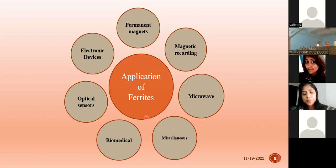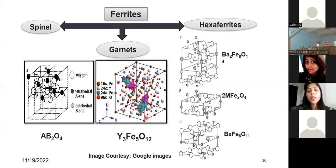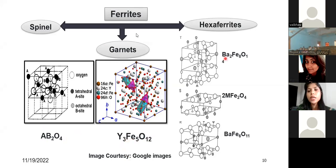We have chosen ferrite materials because of their fundamental properties: permanent magnets, magnetic recordings, microwaves, optical sensors, and electronic devices. Ferrites are of three types — spinel with AB₂O₄ structure, garnets with Y₃Fe₅O₁₂ structure, and hexaferrites with various block arrangements. Among all ferrites, I chose the rare earth iron garnet because of its cubic structure and high ferrimagnetic transition temperature.